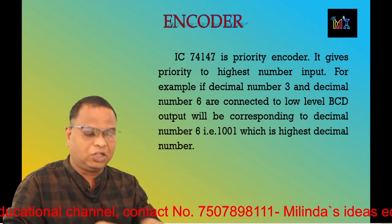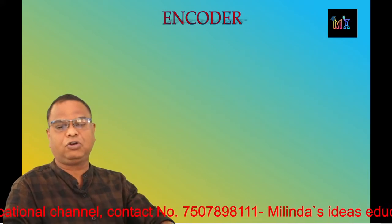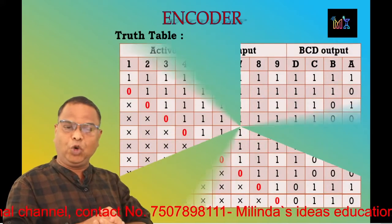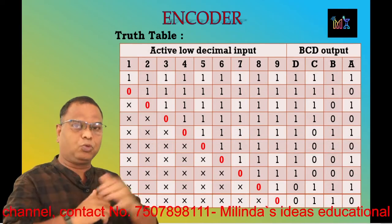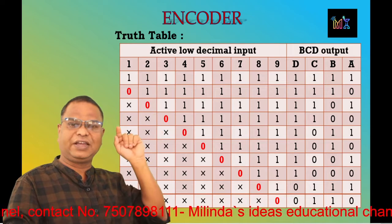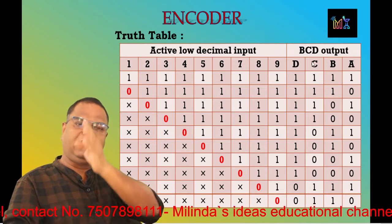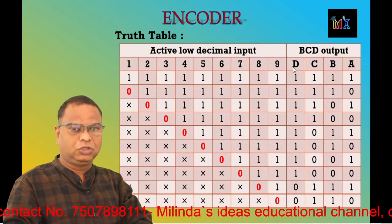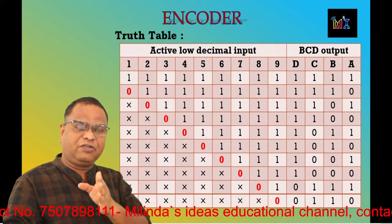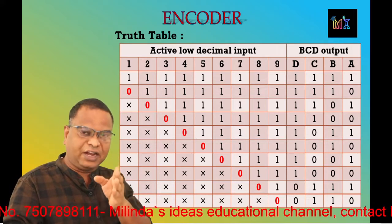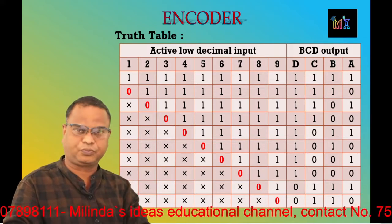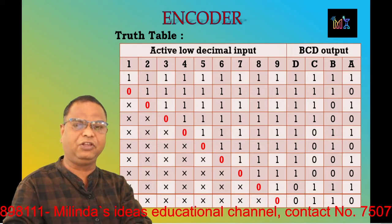Now let us look at the truth table. The active low inputs are 1 through 9. The BCD output is in DCBA format, where D stands for B3, C stands for B2, B stands for B1, and A stands for B0. When all inputs are high (logic 1), the output is also high — this is the default condition representing decimal zero.